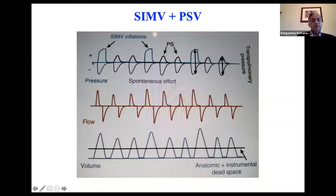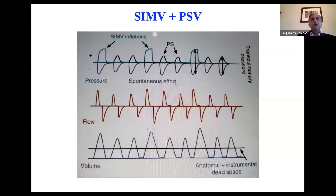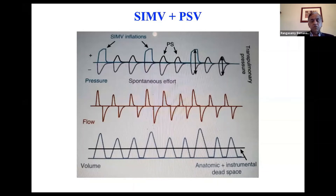Here is the SIMV breath — a big breath — and then the baby breathing spontaneously, but the ventilator is adding pressure support. You can see now that the volume delivered is as good as on a mechanical breath. This is PIP and this is the pressure support value. You set your pressure support at one-third to 50 percent of the delta pressure — so PIP minus PEEP. For example, if it's 20 over 5, the delta pressure is 15, so you set pressure support at 10.